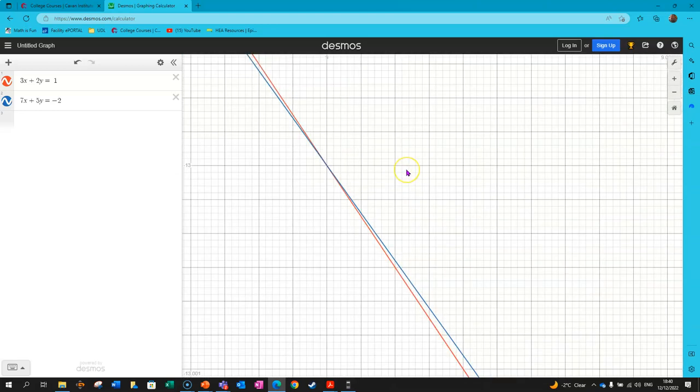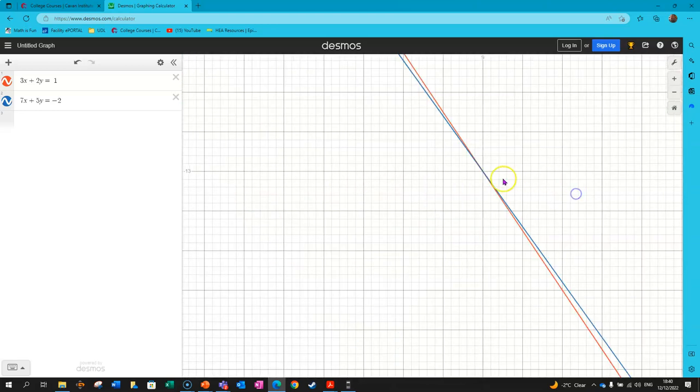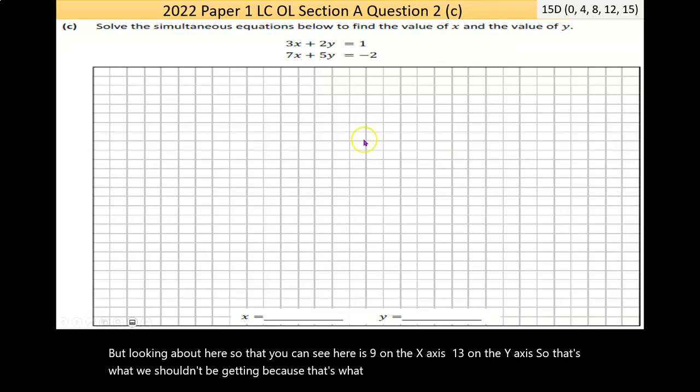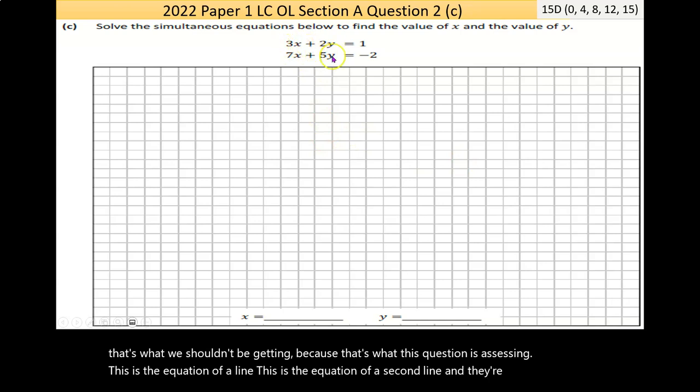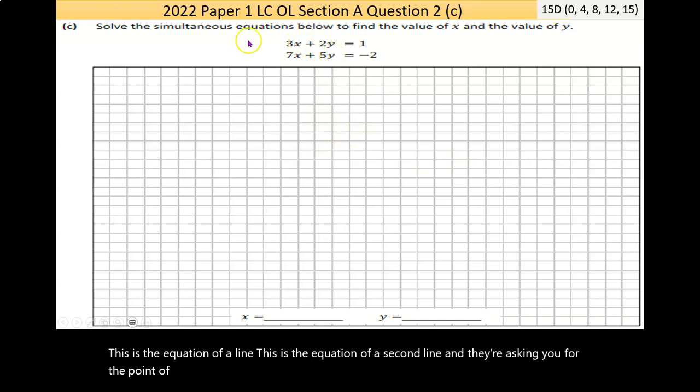And my second line is this one here. I'm going to zoom out because at some stage, unless they have the same slope, they're going to touch. If I zoom back in, now the point of intersection, let's go all the way in, just try to get it closer. Where is the actual point? I zoomed out more than I thought I had. But we're looking about here. So, that's, if you can see up here, it's 9 on the x-axis, negative 13 on the y-axis. So that's what we should end up getting, because that's what this question is assessing.